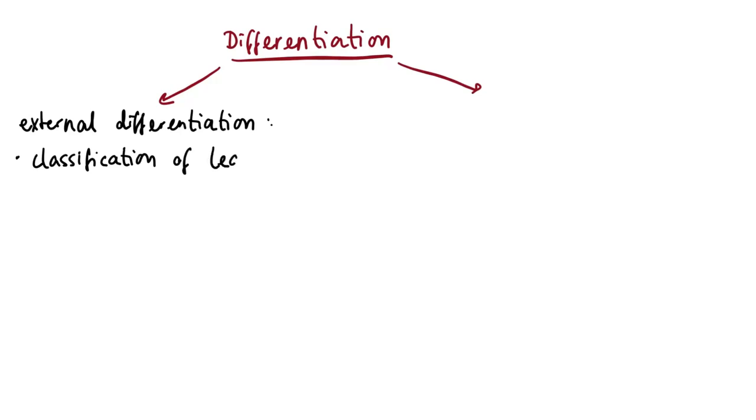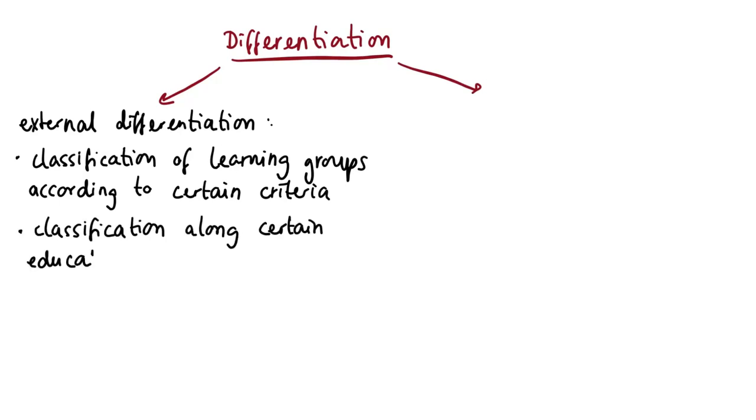This kind of division can be based on specific educational goals, for example specializations or career paths, and age or level of skills and abilities, for example belt colors in martial arts.